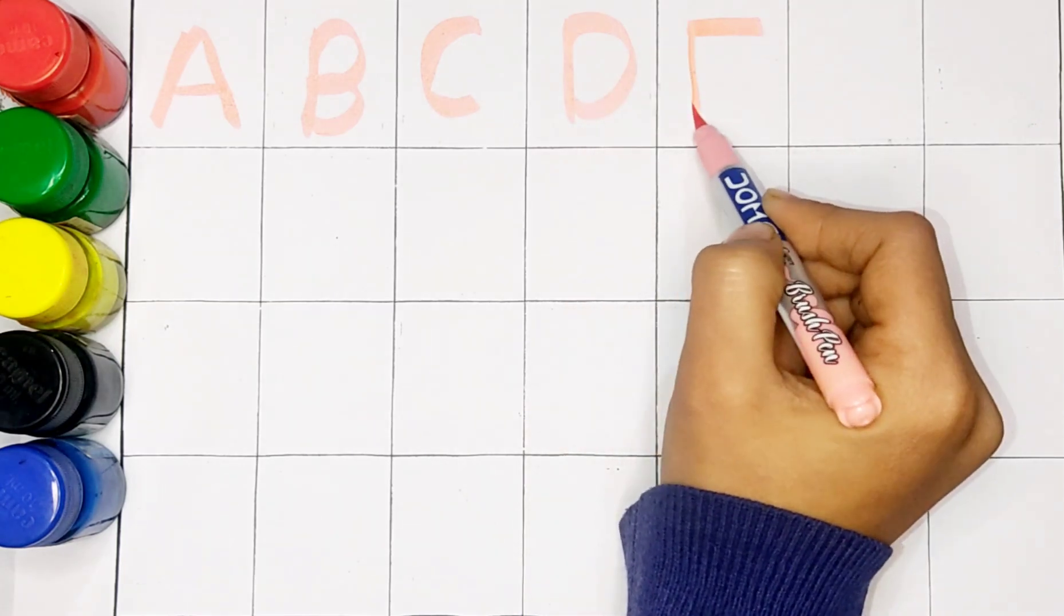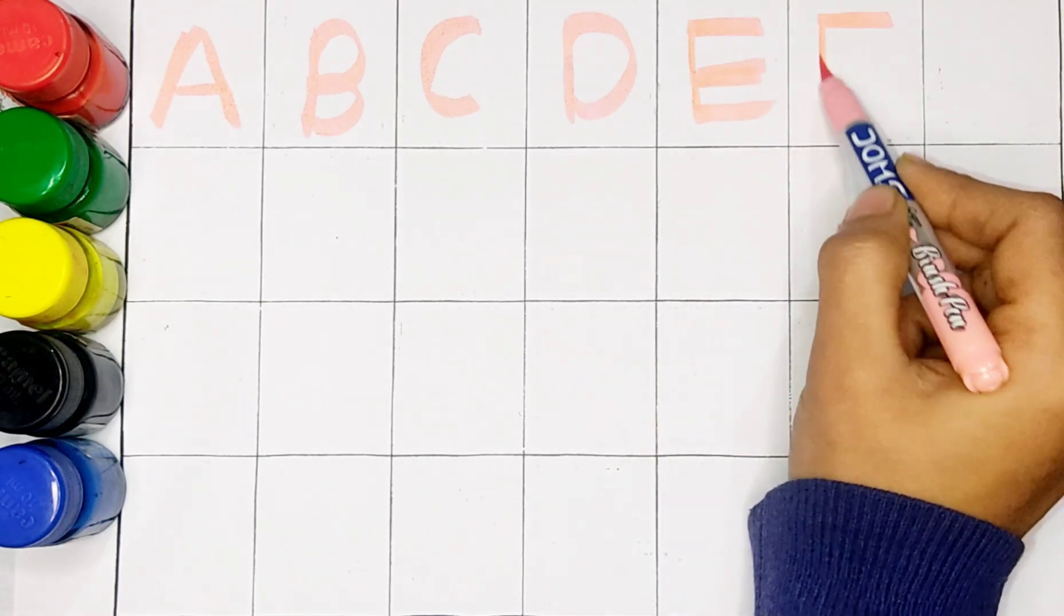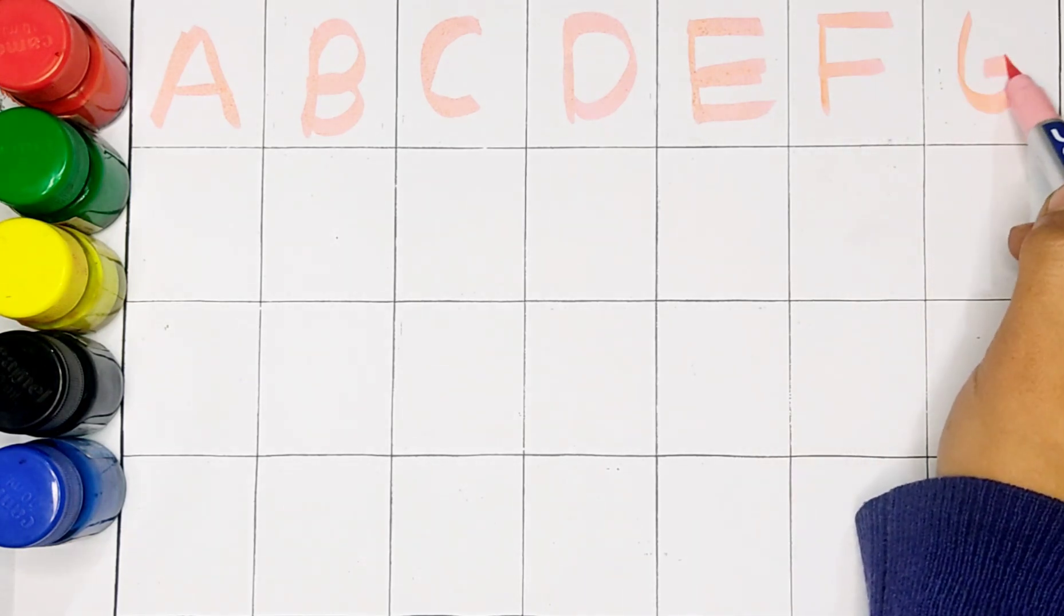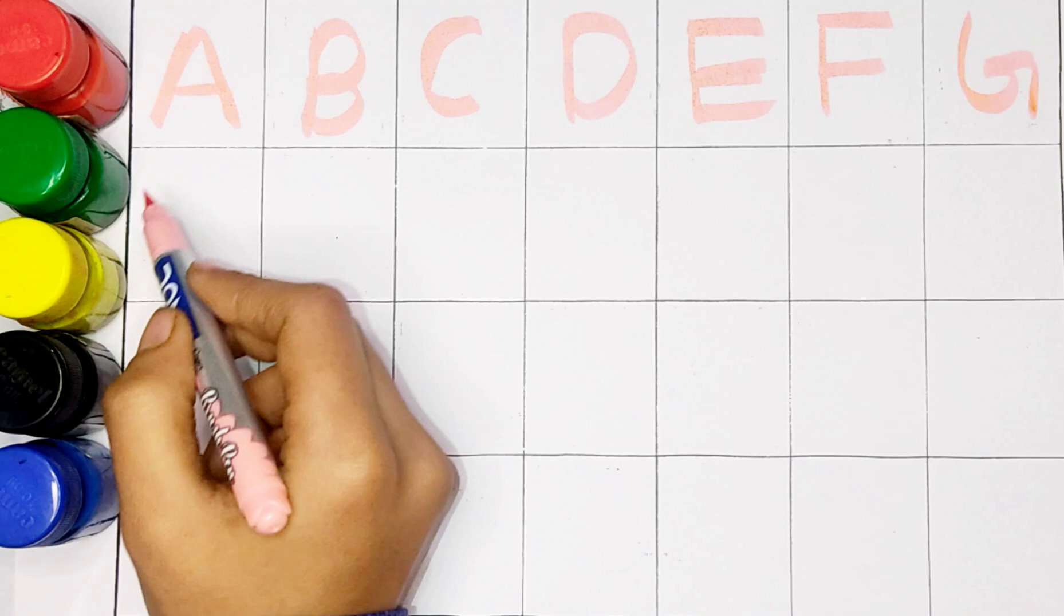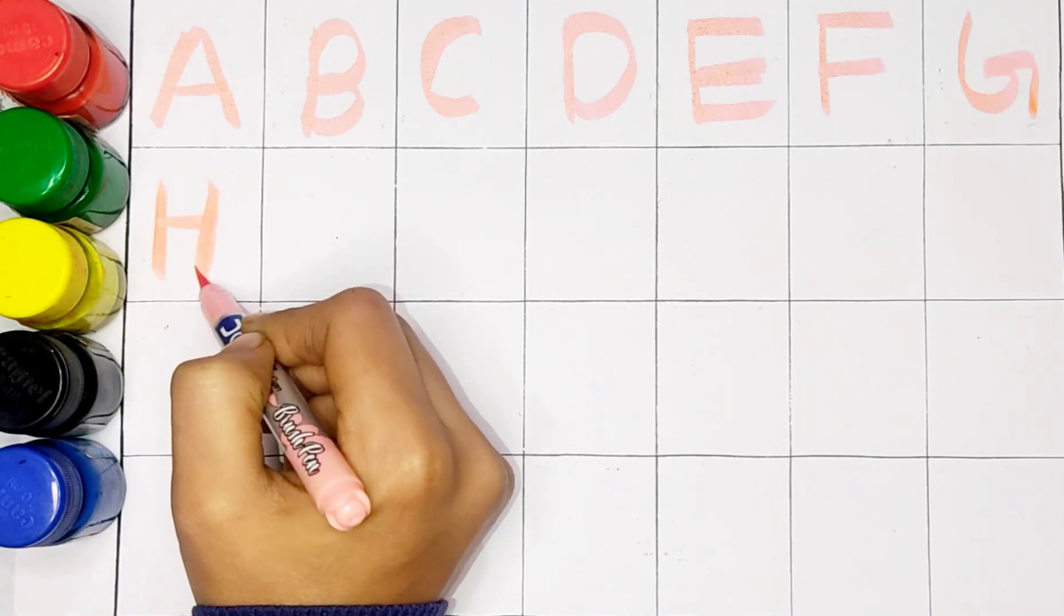E. E for eagle. F. F for fish. G. G for girl. H. H for horse.